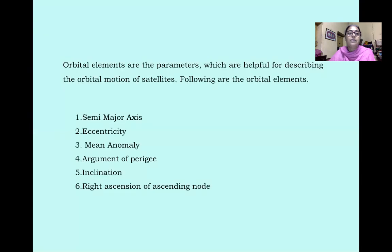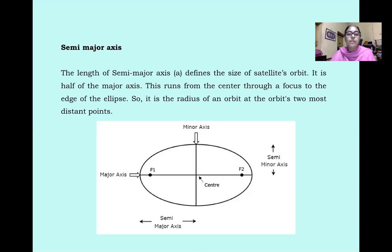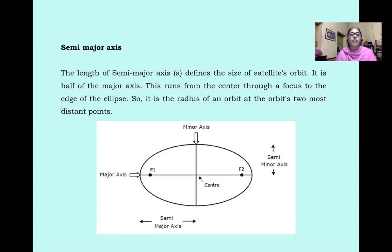Orbital Elements are the parameters which are helpful for describing the orbital motion of satellites. The orbital elements are: semi-major axis, eccentricity, mean anomaly, argument of perigee, inclination, and right ascension of ascending node. The semi-major axis runs from the center through a focus to the edge of the ellipse — it is half of the major axis and represents the radius of an orbit at its most distant point.